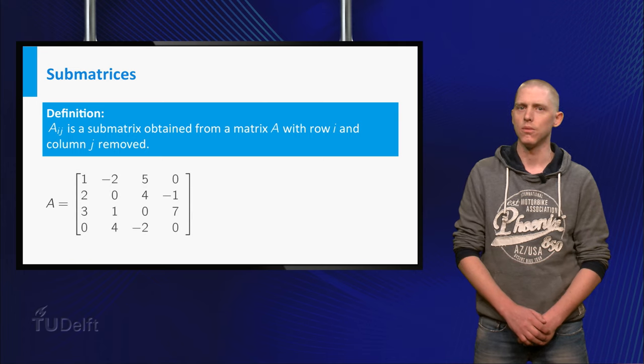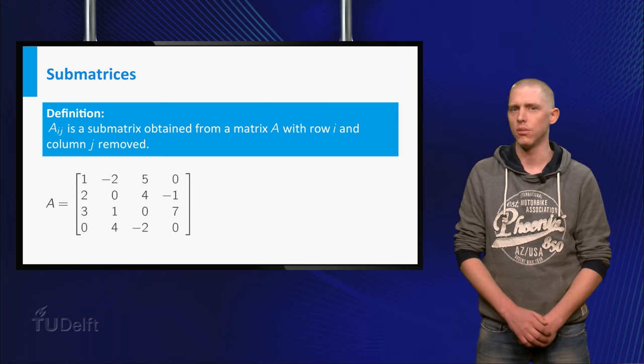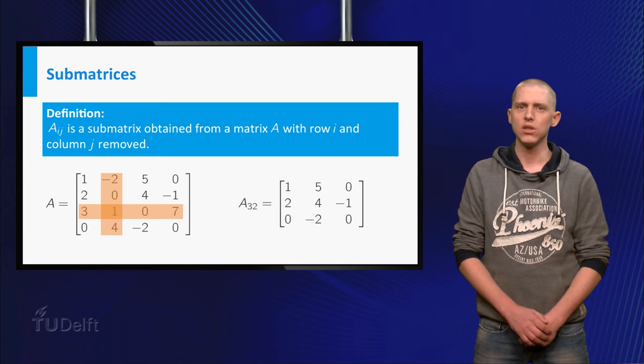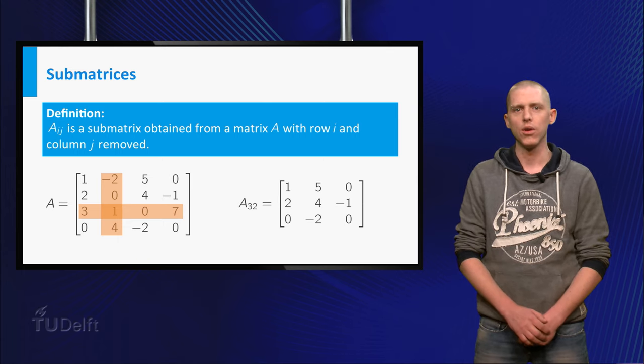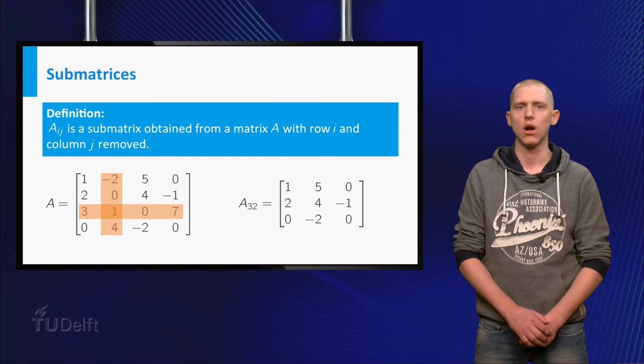For example, if A is the 4 by 4 matrix shown, A32 is given by the first, third and fourth column of A, where you skip the third component of each column.